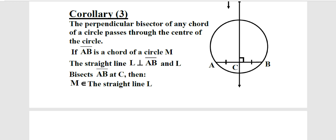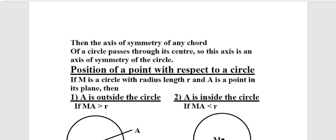Clarion number 3: The perpendicular bisector of any chord of a circle passes through the center of the circle. This means if we draw a straight line that is perpendicular to and bisects a chord inside the circle, then it passes through the center point — the center point belongs to this straight line. Any axis of symmetry of a chord inside the circle is also an axis of symmetry of the circle itself. The axis of symmetry of any chord of a circle passes through its center, so this axis is also an axis of symmetry of the circle.